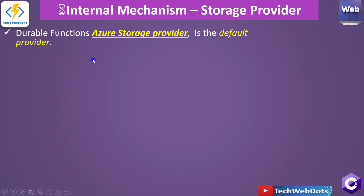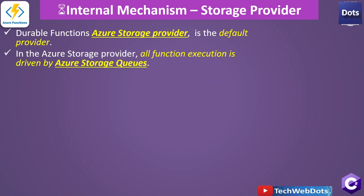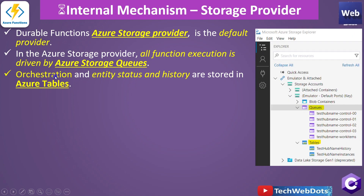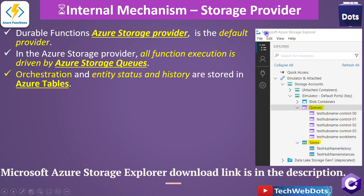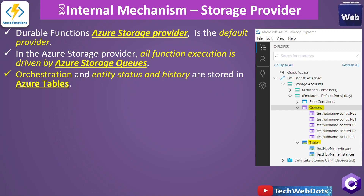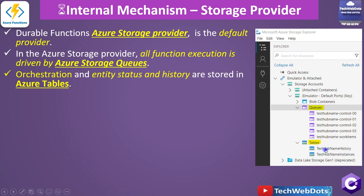The next topic is the storage provider. The Azure Storage provider is the default provider for durable functions. All function execution — meaning orchestration and entity — is driven by Azure Storage Queues. Orchestration and entity status and history are stored in Azure Tables. You can find these in Azure Storage Explorer on your local machine, or under the Storage Account in the Azure portal. The tables are named with the task hub name, for example 'TaskHubName History' and 'TaskHubName Instances'.